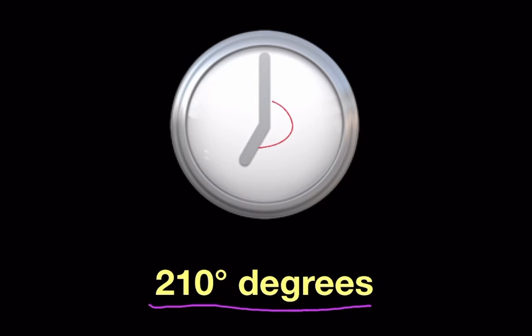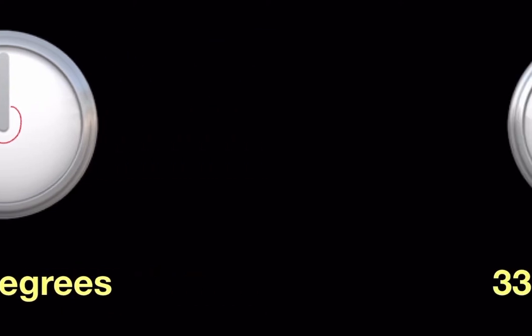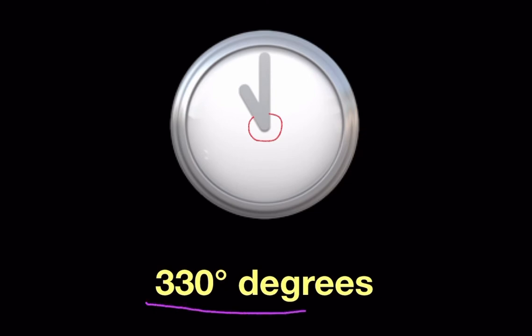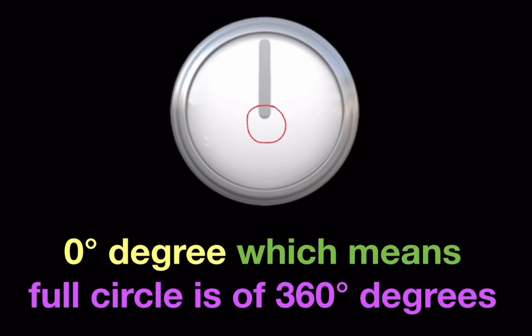210 degrees, 240 degrees, 270 degrees, 300 degrees, 330 degrees. 0 degree which means full circle is of 360 degrees.